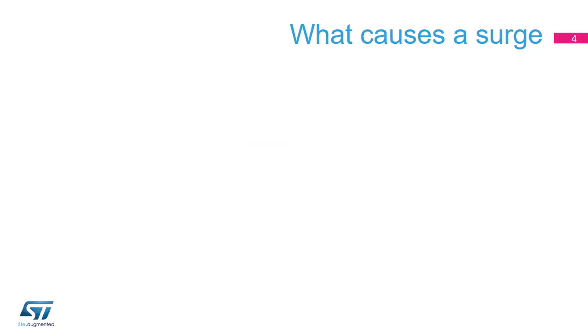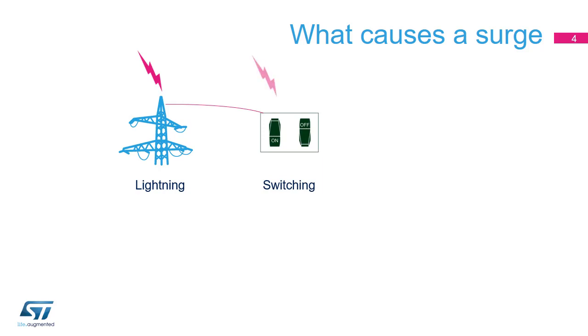Many events can generate surges, each of them leading to different types and levels of surges. Lightning transients occur when lightning strikes near a power line or data line. Switching transients occur in the circuit when electrical loads are turned on and off. Electrostatic discharges, or ESDs, occur with the release of static electricity in the circuit, generated by human contact, for example.